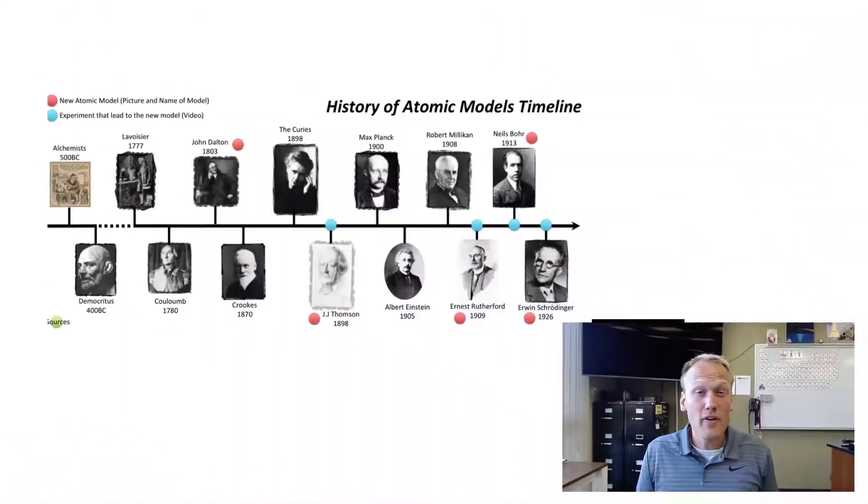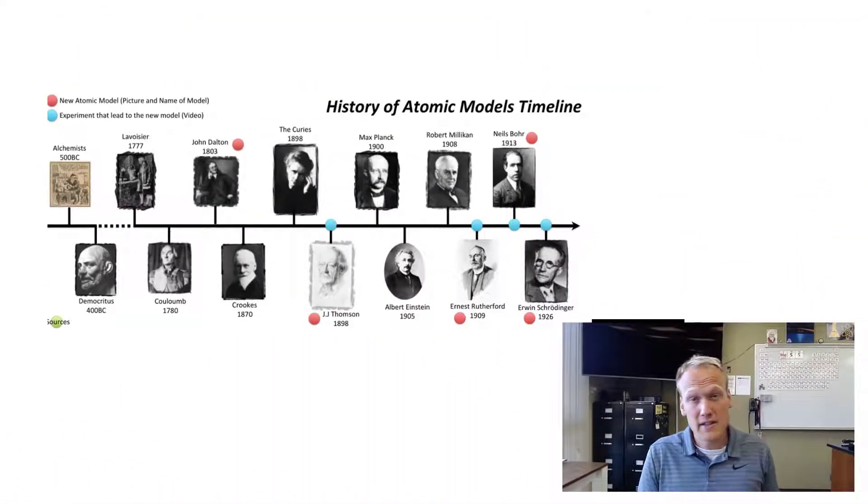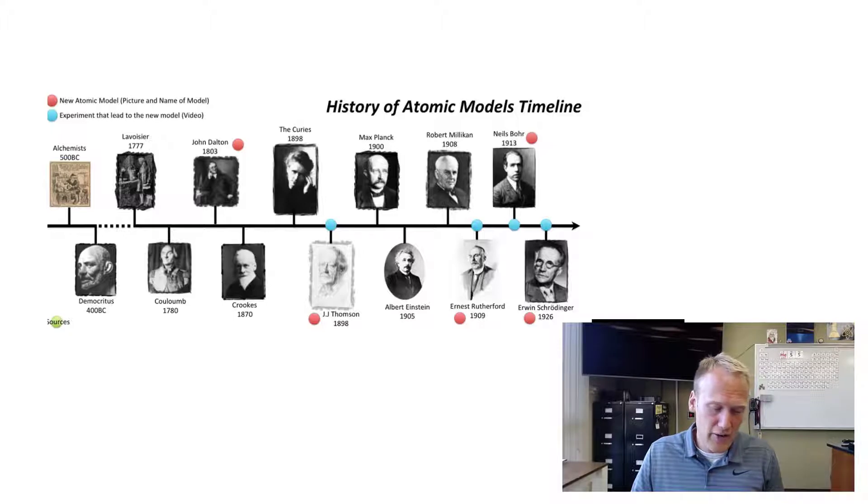Here in Unit 4, we're going to look at the electron and how its interactions with light and energy help us understand more about the structure of the atom. We've already talked about the history of the atom and the timeline. In this section, we'll look at how that timeline gets us into quantum mechanics and the idea of how the electron is positioned around the nucleus.